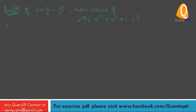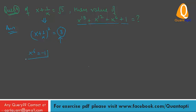Second example: if x plus 1 by x is equal to under root 3, then find the value of x raised to power 18 plus x raised to power 12 plus x raised to power 6 plus 1. We can rearrange this. Since x plus 1 by x whole square equals 3, the right hand side is divisible by 3, so we again consider x raised to power 6 equal to minus 1.